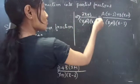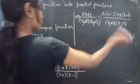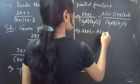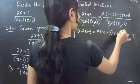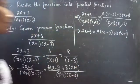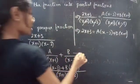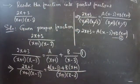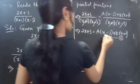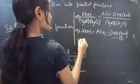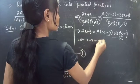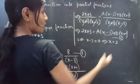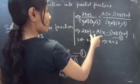Cancelling x plus 1 and x minus 3 on both sides, we get: 2x plus 3 equals A into x minus 3 plus B into x plus 1. Consider this as equation 2. Now let x minus 3 equal to 0, so x equals 3.